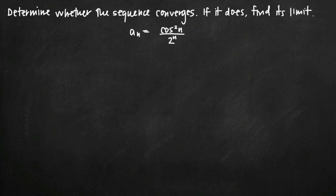Today we're going to be talking about how to determine whether or not a sequence converges, and if it does converge, how to find its limit. In this particular problem, we've been given the sequence a sub n is equal to cosine squared of n divided by 2 to the n power. Now before we start, I want to talk a little bit about the instructions of the problem, because I feel like they're a little bit misleading. Often we're asked to find whether or not a sequence converges and then if it does to find its limit.